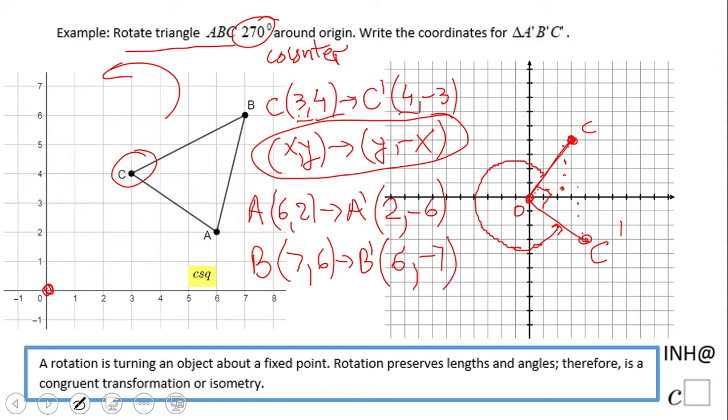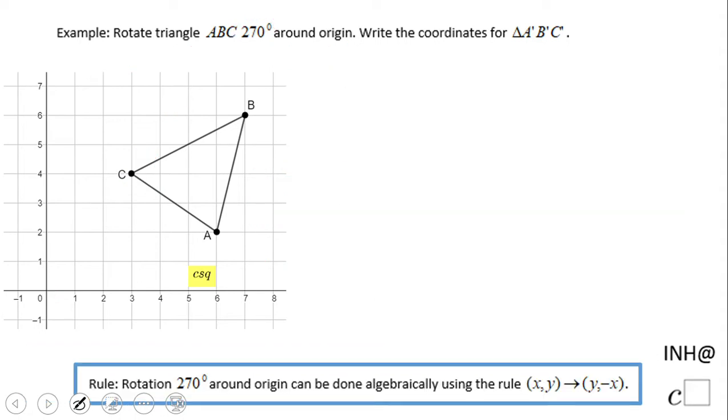that's it! This is the rule for rotating 270 degrees counterclockwise around the origin. And you have two more examples. If you enjoyed this video, don't forget to click the like button and come back to C Squared for more math. Thank you!